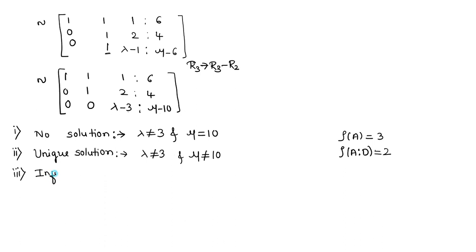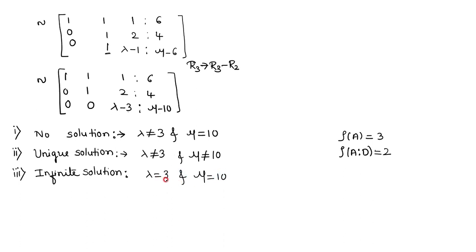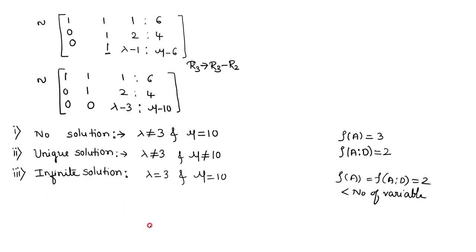For infinite number of solutions, the rank of matrix A and the rank of the augmented matrix must be equal, but less than the number of variables. Since the number of variables is 3, the rank must be less than 3. This is possible when lambda equals 3 and mu equals 10. In that case, the rank of matrix A equals 2 and the rank of the augmented matrix also equals 2, but both are less than the number of variables. Therefore, the system will have infinite solutions. Thank you for watching.